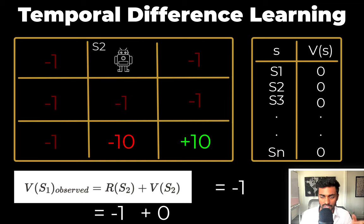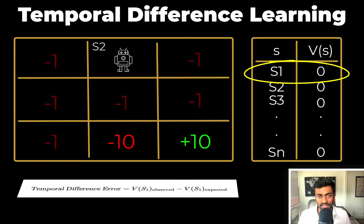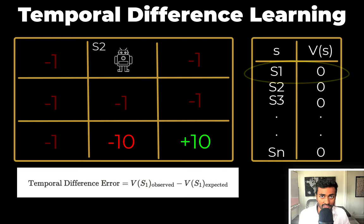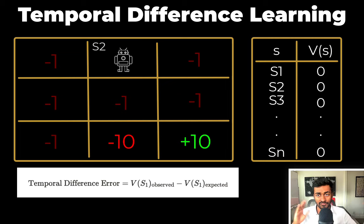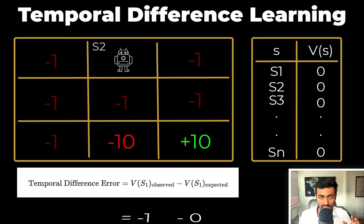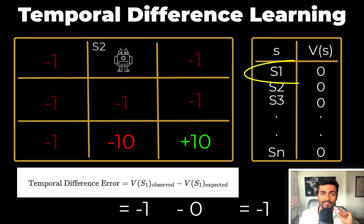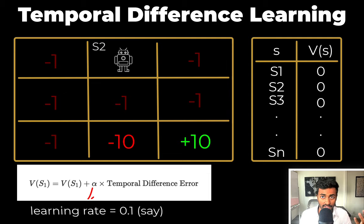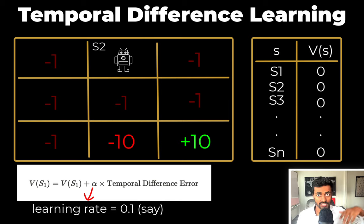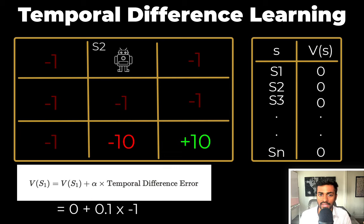From the Bellman equation, we know that the value of state S1 is the reward received transitioning into the next state S2, plus the value of state S2. So that's negative 1 plus 0 (since we initialized everything to 0), giving a total value of state S1 as negative 1. The observed value for state S1 is negative 1, but the expected value in our table is 0. The difference between the observed value and the expected value is known as the temporal difference error. It's temporal because it calculates the error between two different time steps. Because there's a difference, we need to update the value of state S1 in our table using the update formula. Alpha here is the learning rate — it determines how much we change our values. Plugging in the values, we get the value of state S1 as negative 0.1, which we update in the table.